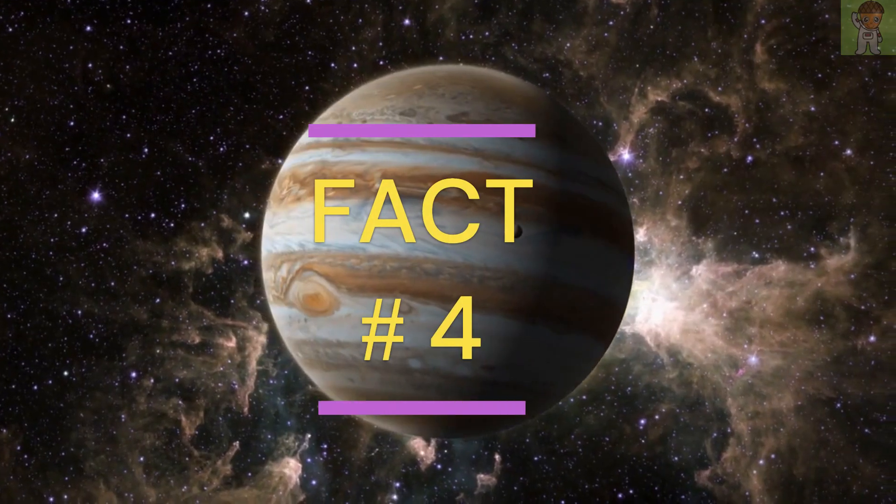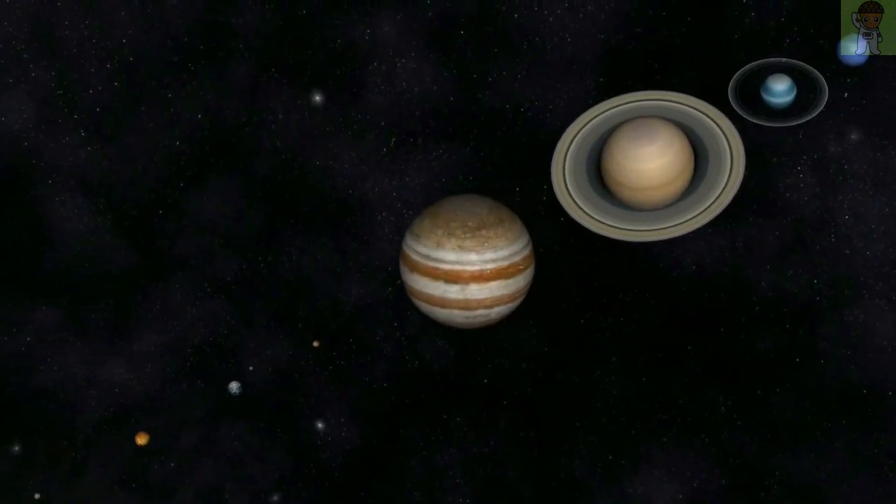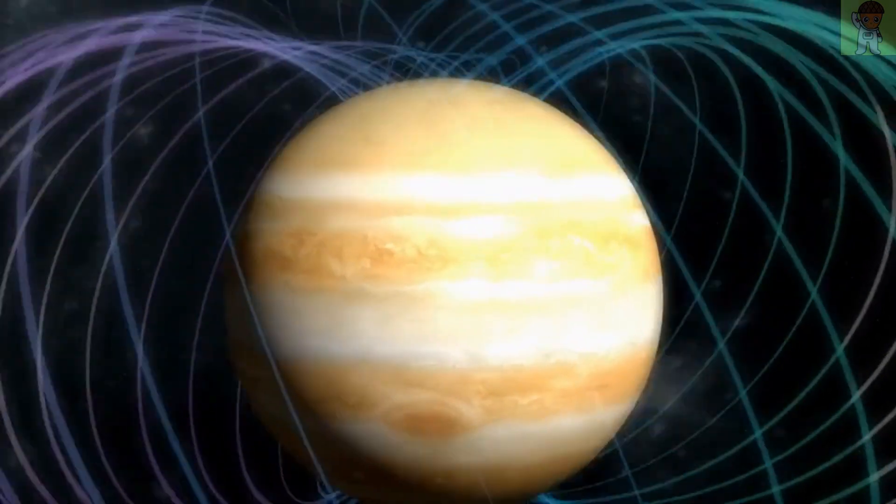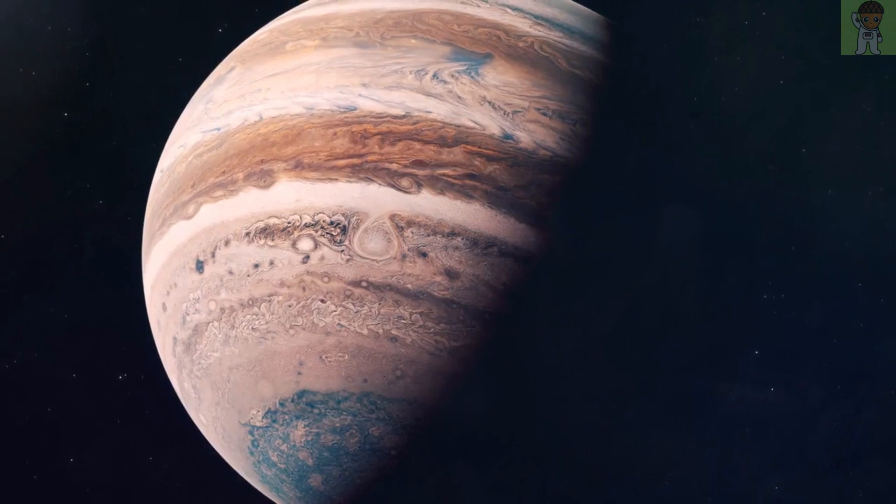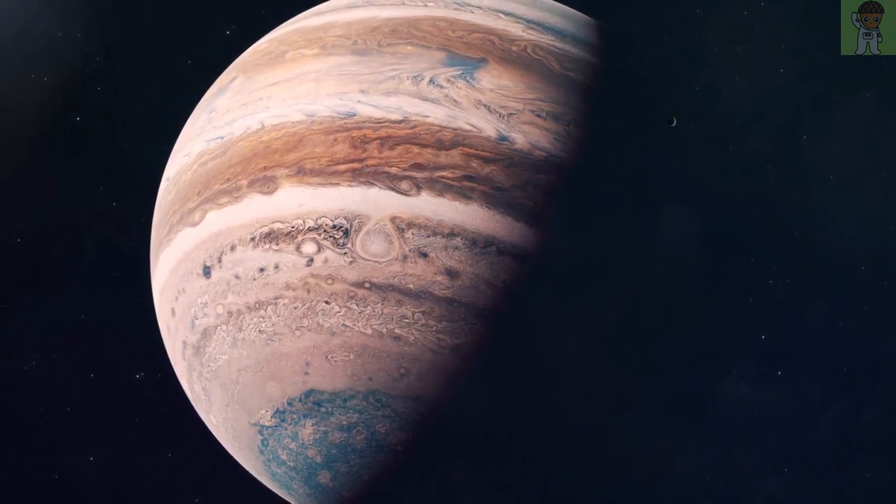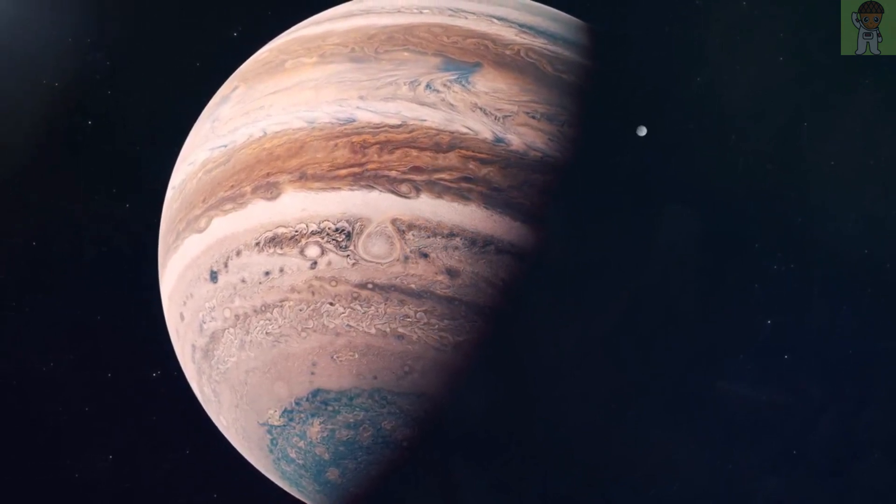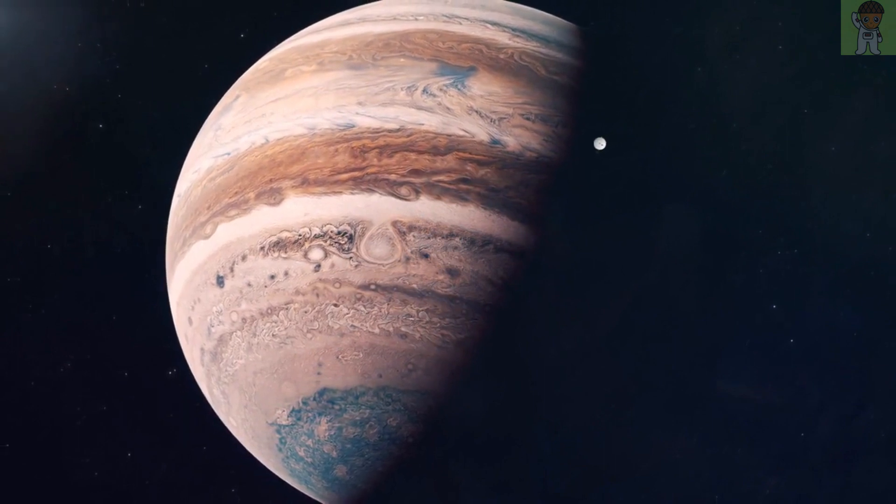Fact number 4. Jupiter is the largest planet in our solar system. But did you know that it also has the strongest magnetic field? The magnetic field around Jupiter is so strong that it can affect radio signals and cause auroras to form around the planet's poles.